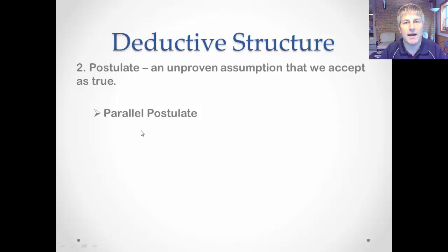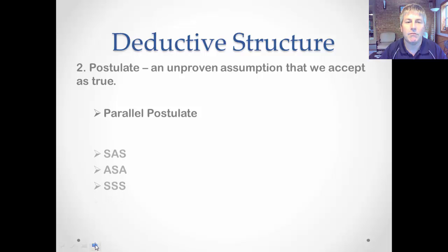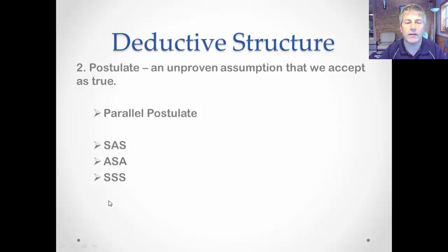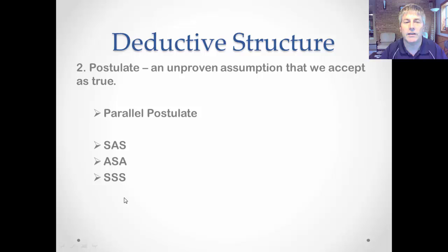The parallel postulate says: given a line and a point not on that line, there is exactly one line through that given point that is parallel to our original line. That's something you'll have to memorize and write out. There are also postulates that prove triangles congruent — Side-Angle-Side, Angle-Side-Angle, and Side-Side-Side. We use proving triangles congruent as the tool to help us formulate our thinking and execute deductive structure.